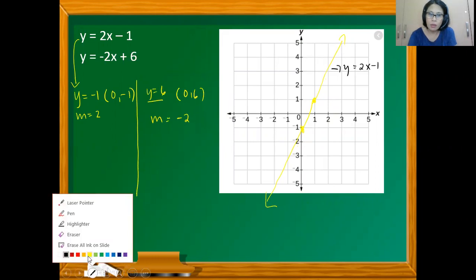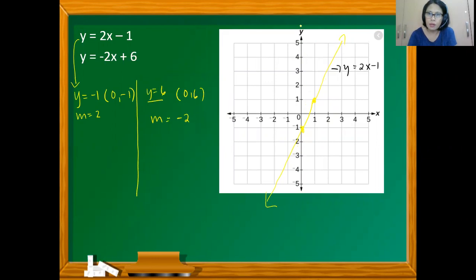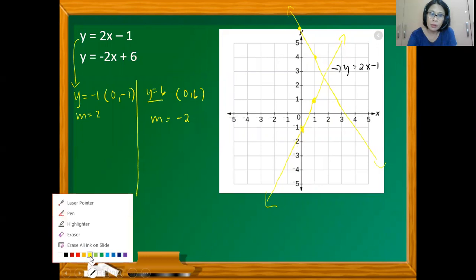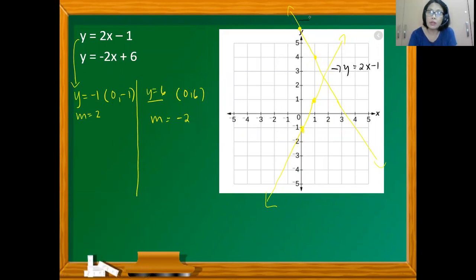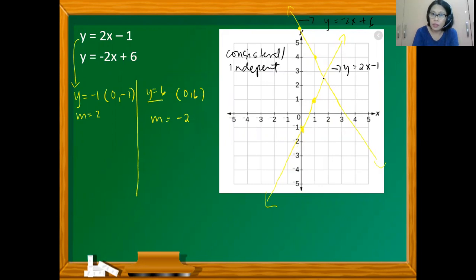For the second equation, the y-intercept is 6, so we have (0, 6), and the slope is negative 2 — that's negative 2 over 1. Moving down 2 units and running 1 unit to the right gives another point. Connecting these two points gives the graph of y equals negative 2x plus 6. The two lines intersect, so the system is consistent and independent, and the point of intersection is approximately (7/4, 5/2).